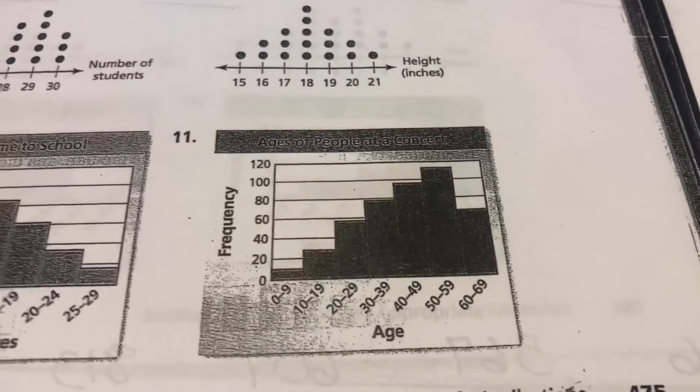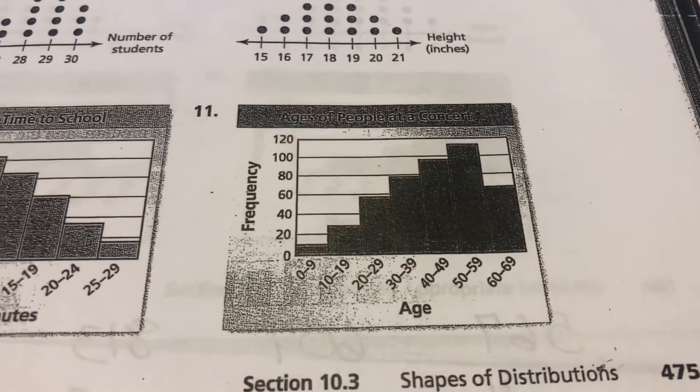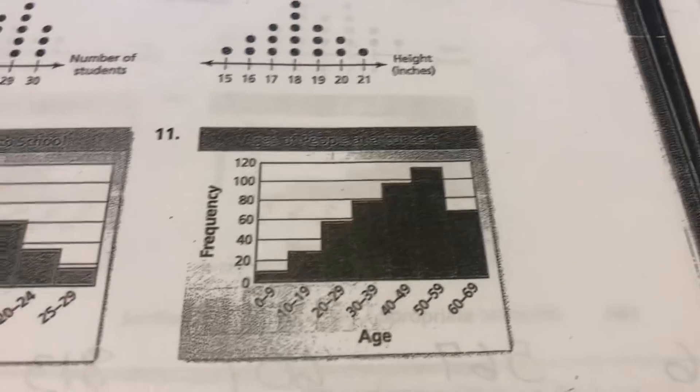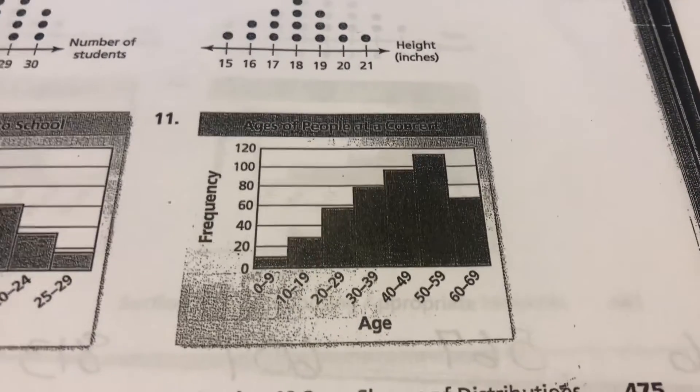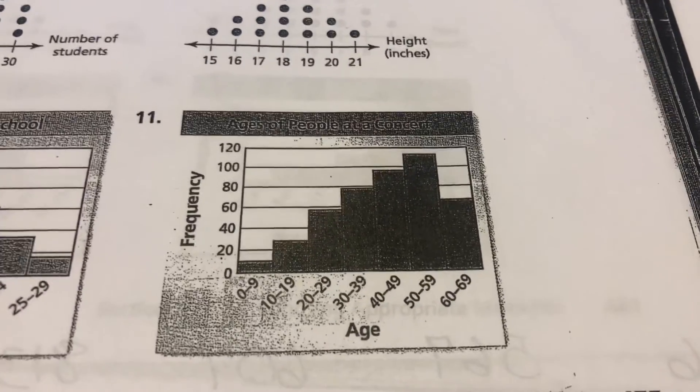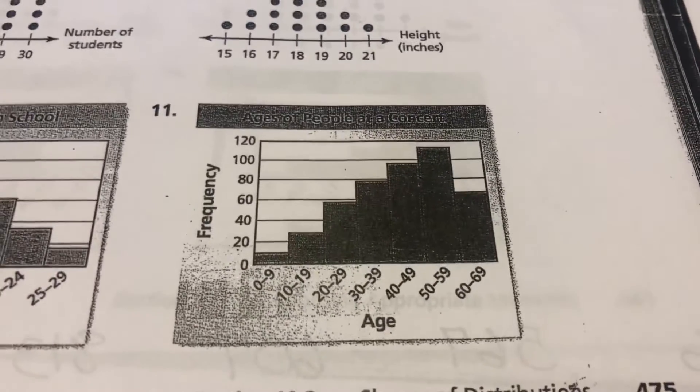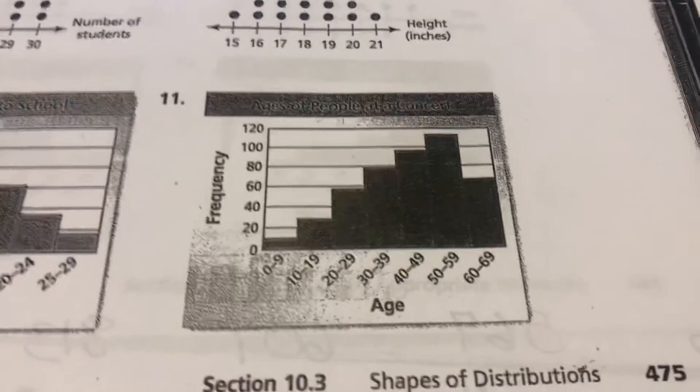When I go to number 11, that is also skewed. So once again, I would use the median to describe the center, and I would use the interquartile range, the IQR, to describe the variation. All right, talk to you later. Bye.